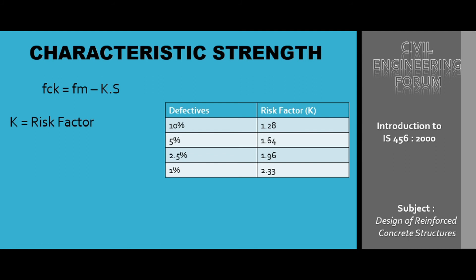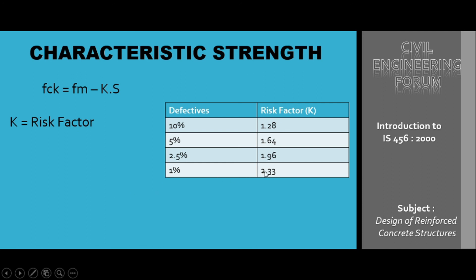For risk factor k, we refer to a table with two columns: percentage defectives and risk factor k. As per our definition, 95 percent of test results should be positive, meaning 5 percent are failing. If there are 10 percent defectives, the risk factor is 1.28. For 2.5 percent defectives, it is 1.96. For 1 percent defectives, it is 2.33. Since we have defined characteristic strength with 5 percent defectives, we take the risk factor as 1.64, and this is the value used in IS code design.